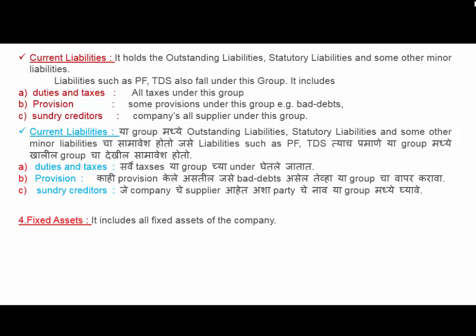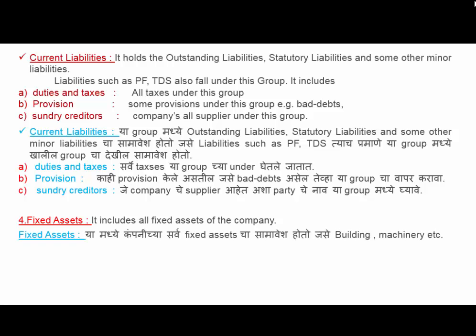Fixed Assets includes all fixed assets of the company, for example buildings, machinery, land, premises, etc. Next is Investment — this group includes bonds, debentures, securities, shares, etc.